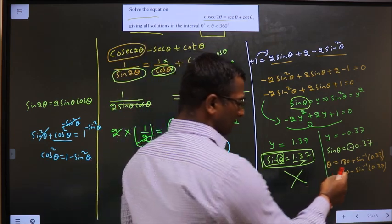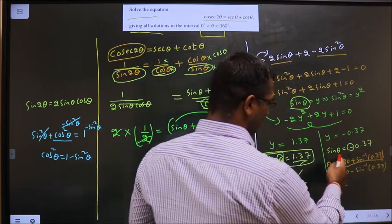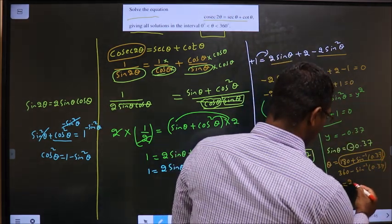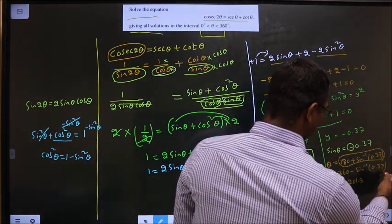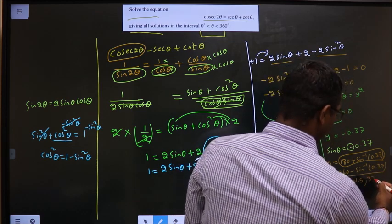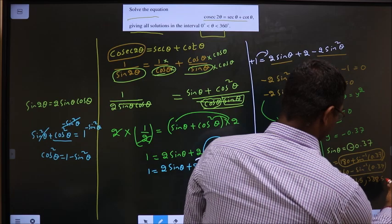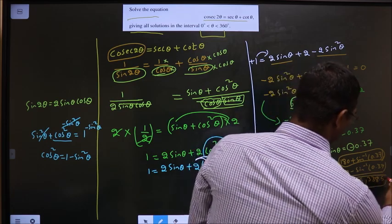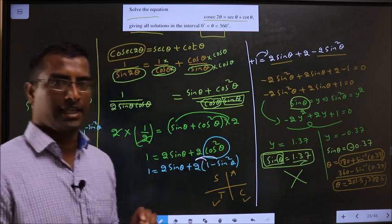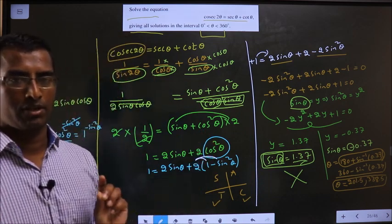Put this in the calculator. You get the answer to be 201.5. When you put this, you get 338.5. So these are the values of θ in the given interval satisfying the given equation.